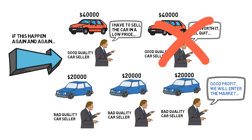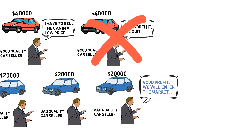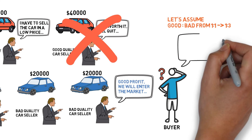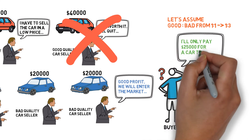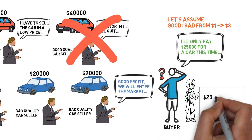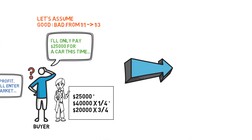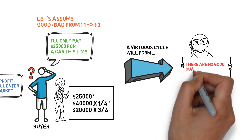When there are fewer good quality cars in the market, the situation gets worse. For example, let's assume the ratio of good quality cars to bad quality cars drops from 1:1 to 1:3. Now buyers will only pay $25,000 for a car. This new lower price will cause even more good quality sellers to exit the market, and the vicious cycle continues until there are no good quality cars left.